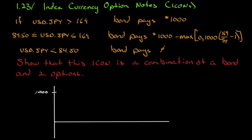In every chapter I'm going to try to give you a very challenging question — one you probably cannot answer. This is question 1.23 from the back of chapter 1, and it deals with something called an Index Currency Option Note, or ICON. It describes what the ICON is and the particular ICON we're looking at.